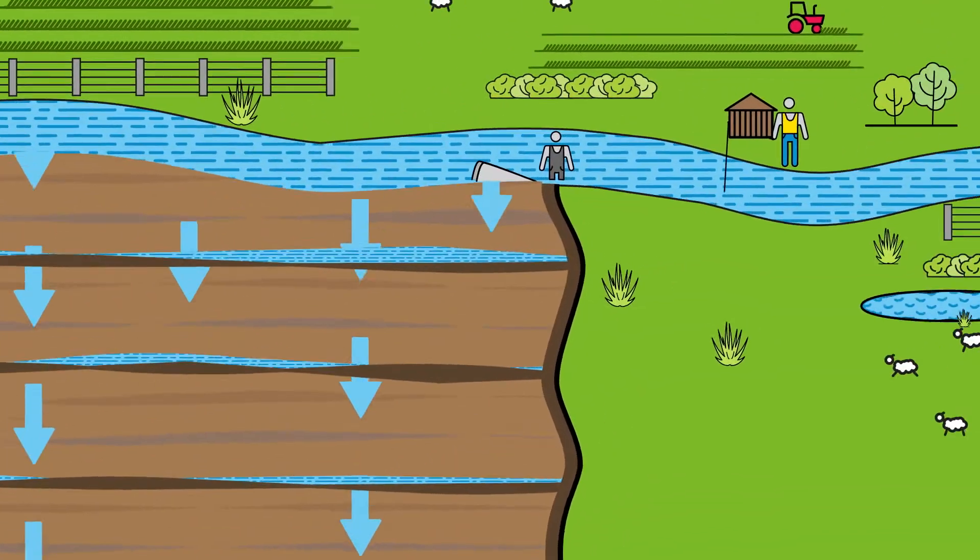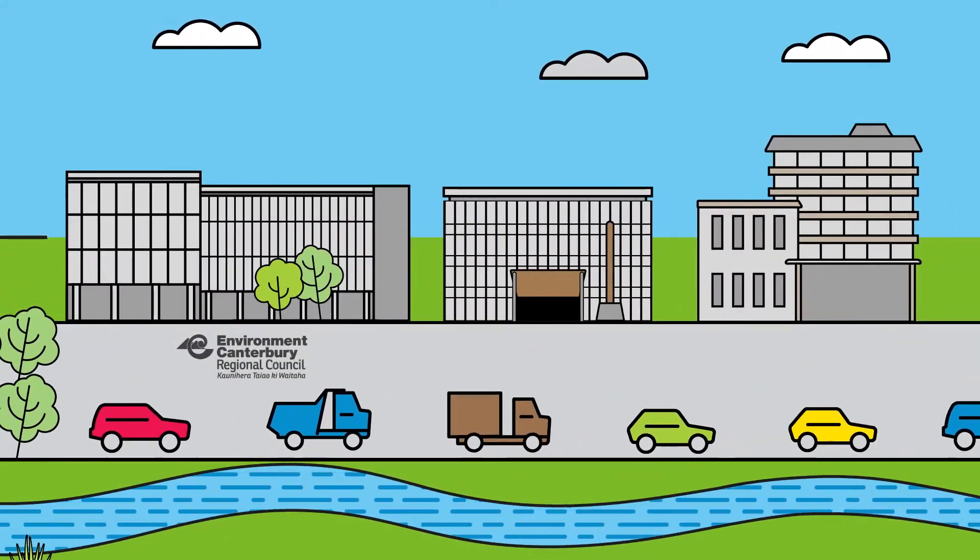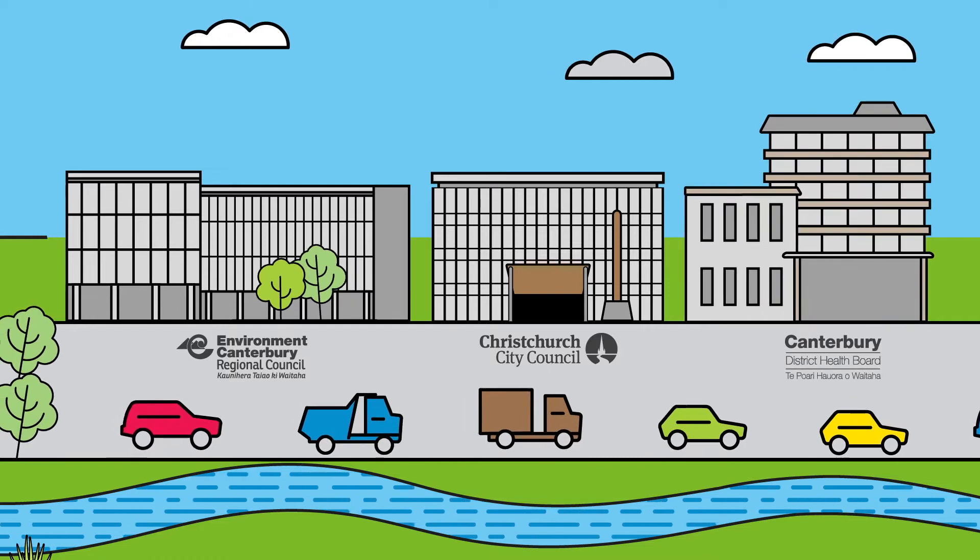The responsibility for ensuring safe drinking water is held by three agencies: Environment Canterbury, Christchurch City Council, and the District Health Board.